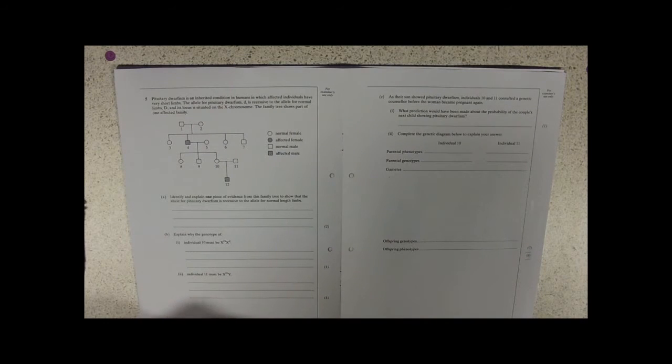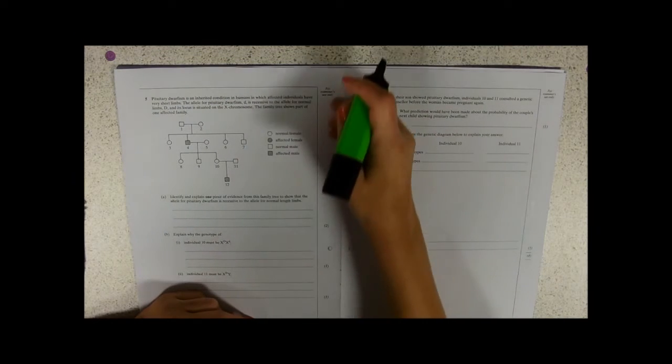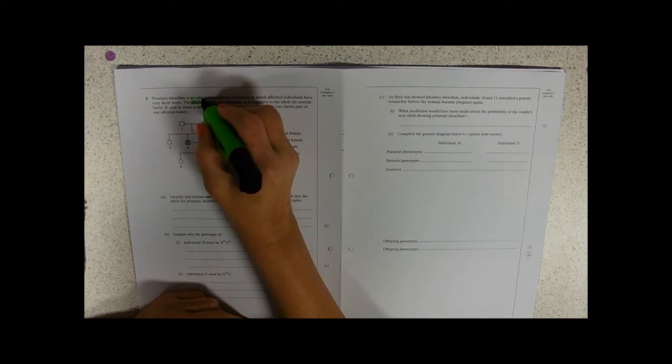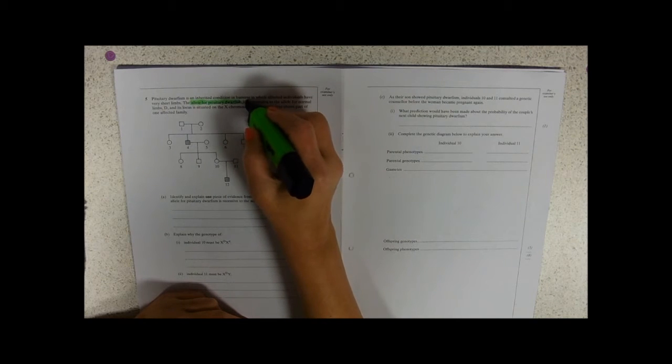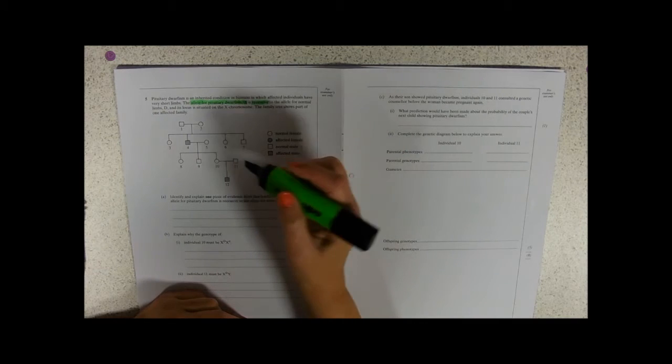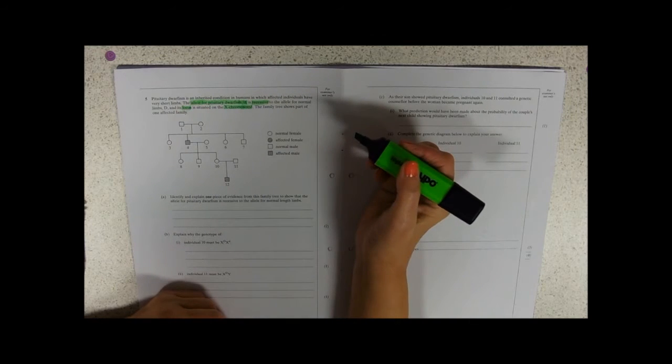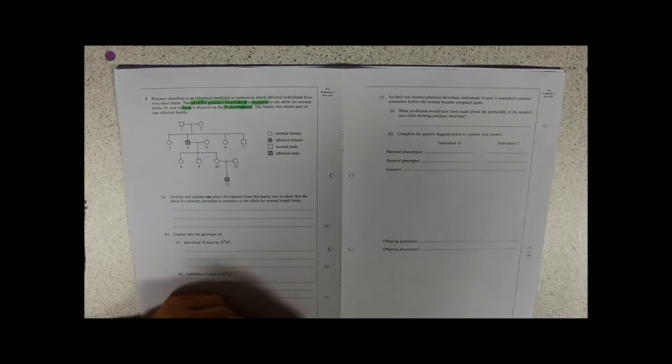This one's about pituitary dwarfism, an inherited condition in humans in which affected individuals have very short limbs. The allele, so this is the important stuff, the allele for pituitary dwarfism, little d, is recessive to the allele for normal limbs, big D, and it's situated on the X chromosome. So this shows part of one affected family.